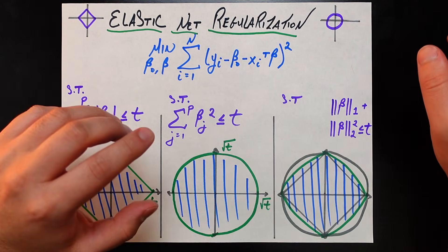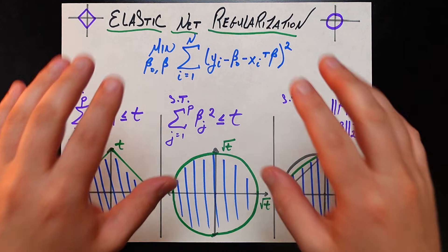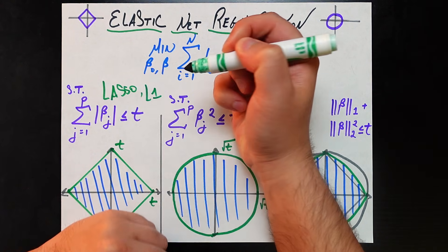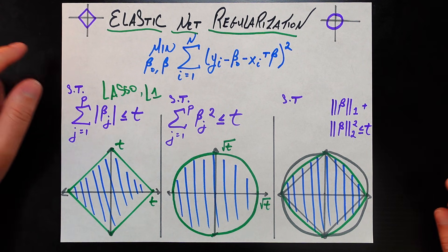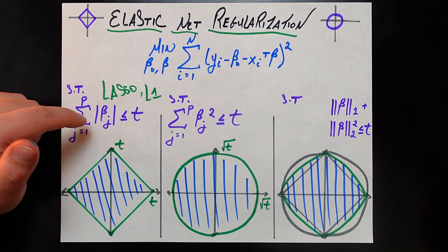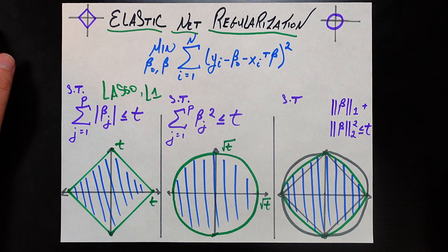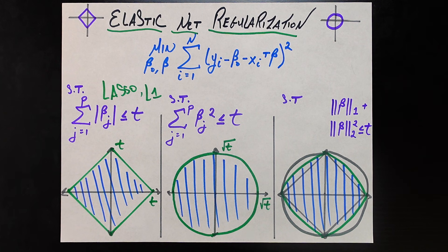When we talk about lasso and ridge — L1 and L2 regularization — we add an extra constraint on top of this minimization problem. In lasso (L1), we enforce that the sum of the absolute values of the betas from beta-1 to beta-p must be less than or equal to some number t. The smaller t is, the harsher the regularization. As t goes to infinity, we are not really doing any regularization at all.